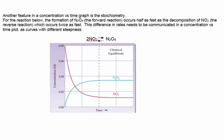In this example, NO2 decomposes at twice the rate as the formation of N2O4, and that information needs to be depicted in the curves.